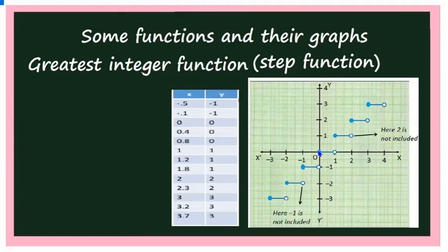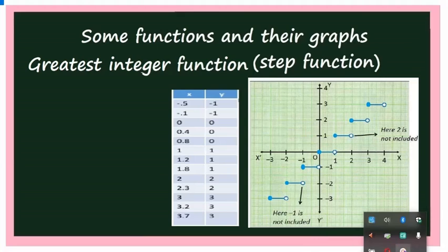In the graph, the left endpoint of each interval is closed (shaded) and the right endpoint is open. This pattern gives the graph a staircase appearance, which is why the greatest integer function is also called the step function. These are the important functions in this chapter. Some other functions will appear in the second-year syllabus. Thank you.